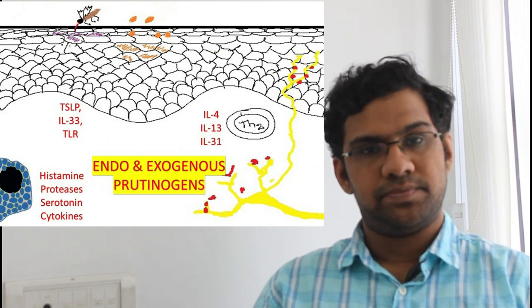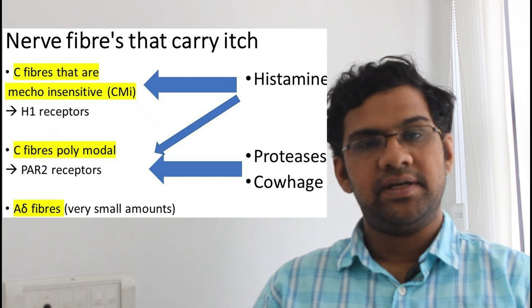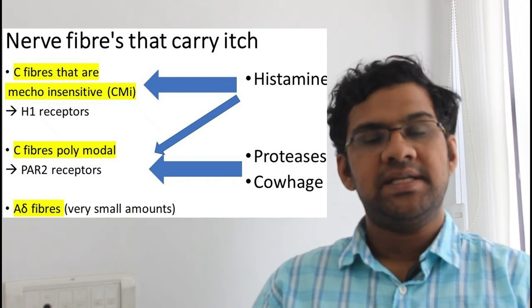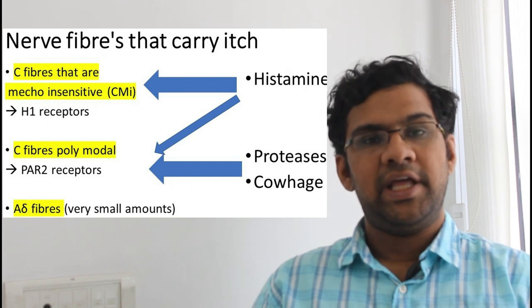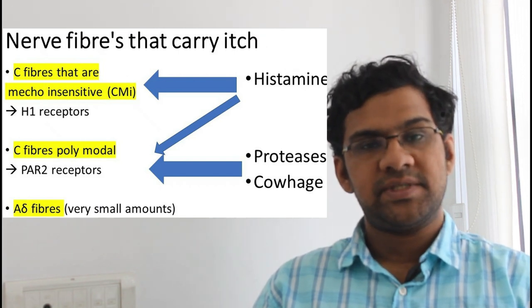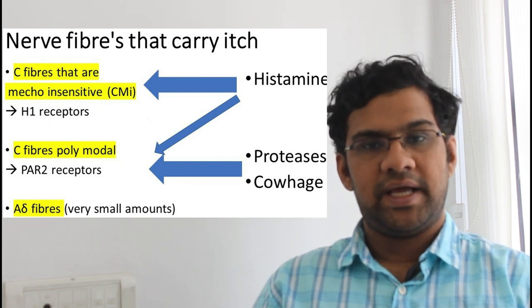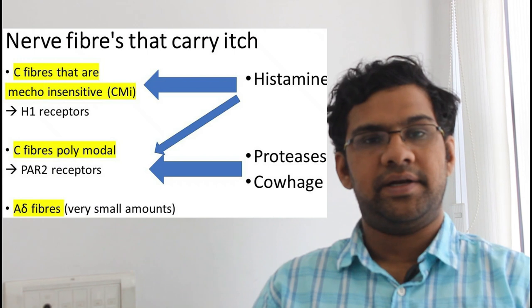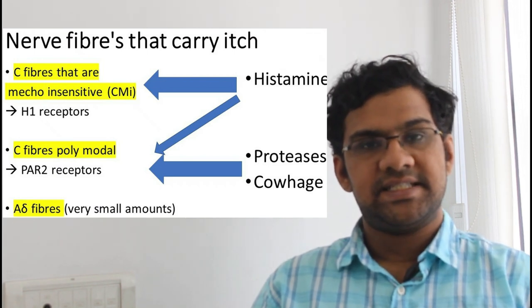C nerve fibers and A-delta nerve fibers play a major role in transmitting the itch. Among them, C fibers are most important. Not only itch, they also help in transmission of vague pain. C nerve fibers have a very small diameter and are not myelinated.